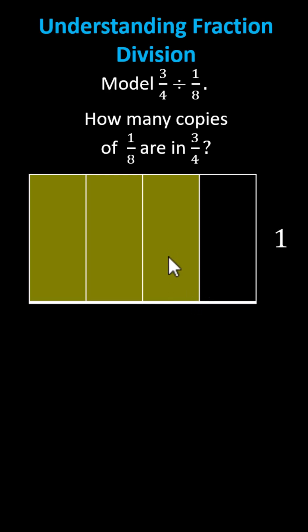Now to determine how many 1 eighths, or how many copies of 1 eighths are in 3 fourths, we'll take the model for one whole unit and cut it into eight equally sized parts vertically. Each of these smaller pieces represents 1 eighth.